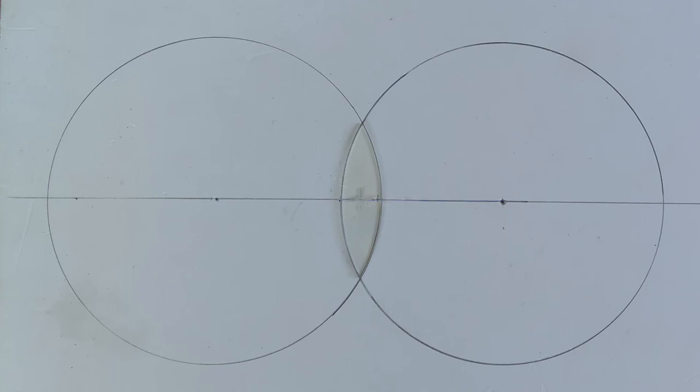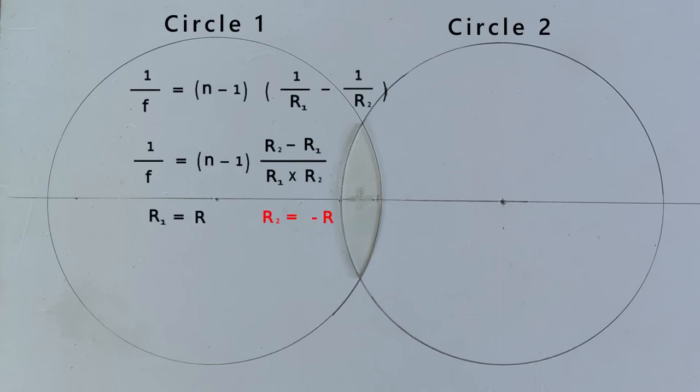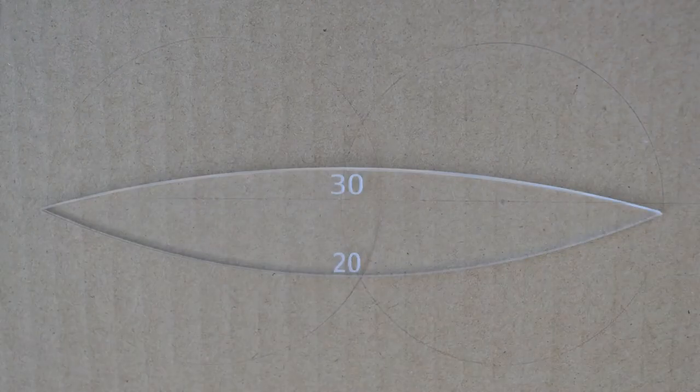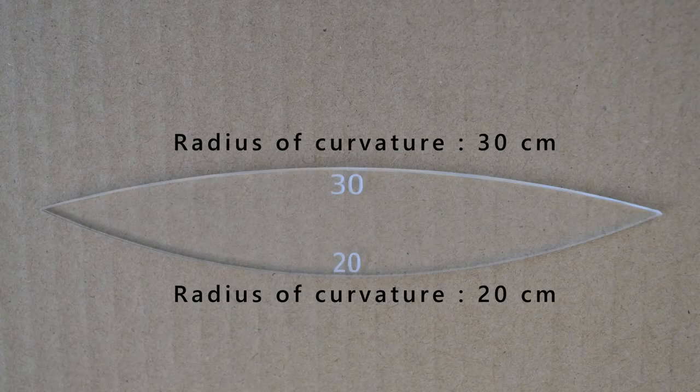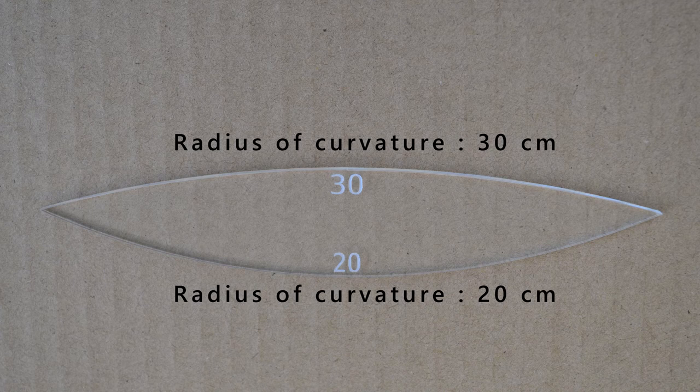For incident rays coming from left to right, value of R1 will be positive and that of R2 negative. Since both values are same, we can rewrite the equation. In the case of acrylic, focal length is same as radius of curvature. Can you find out focal length of this convex lens which has different radii of curvatures? Will it be same on each side? Do give it a try.